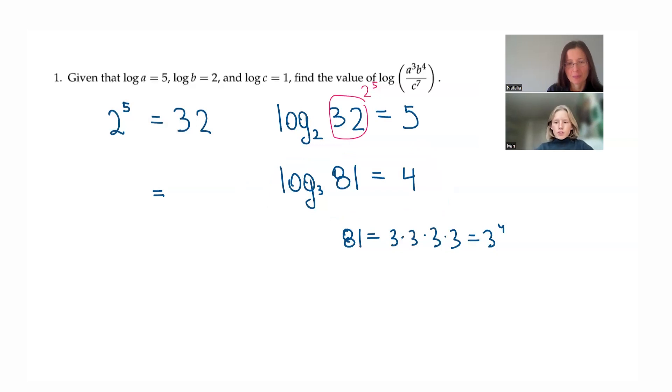So 3 to the 4th is equal to 81? Mm-hmm. That's right. All right. Very good.